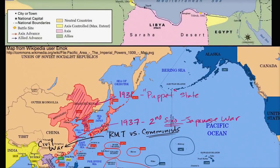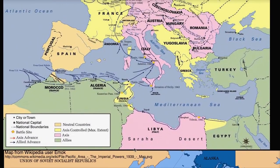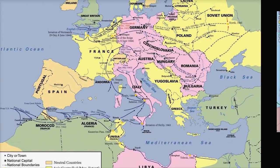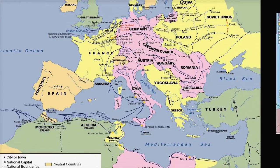Now let's remind ourselves what's happening in Europe. As we go through the 1930s, Hitler's Germany — the Nazi Party — is getting more and more militaristic. They are allied with Benito Mussolini's Italy. They're both extremely nationalistic, and they both do not like the Communists at all.